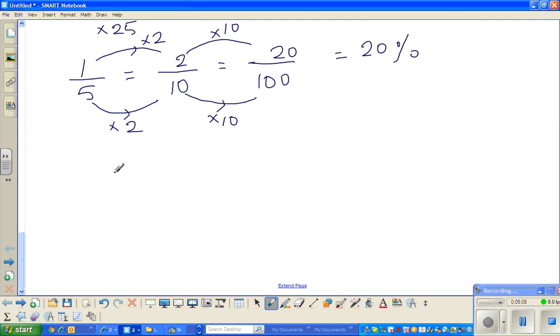Half is 50%. A quarter is 25%. One fifth is 20%. And, if you don't know, it doesn't matter. You can think through it and get the answer. And, finally, one tenth. 10 goes in 100 10 times. So, multiply the denominator with 10. So, also multiply the top with 10. So, this is 10%.